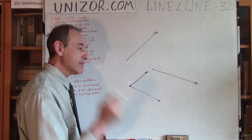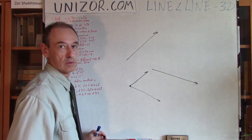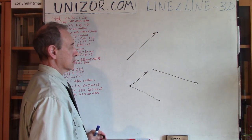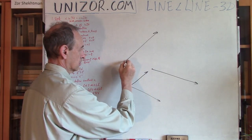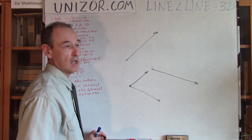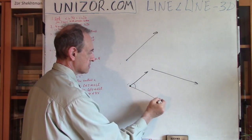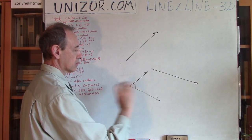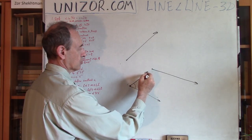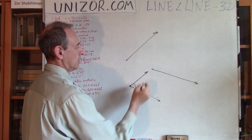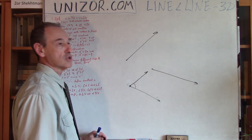By definition, the angle between two rays in three-dimensional space which do not have the same origin is the angle between the two rays drawn from a randomly chosen origin, where one ray is parallel and similarly directed to the first original ray, and the other is parallel and similarly directed to the second. That is the definition.